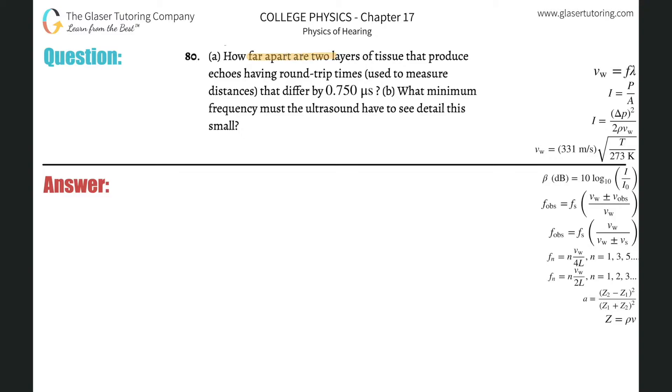Number 80, letter A: How far apart are two layers of tissue that produce echoes having round-trip times that differ by 0.75 microseconds? All right, so number 79 kind of dealt with this a little bit, so you might want to check that one out. When we have this round-trip time of 0.75, that's the time it takes to go one way and back.